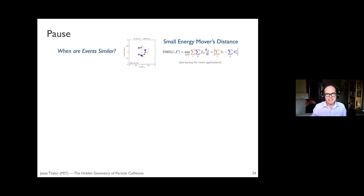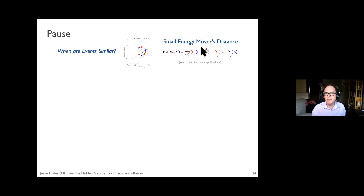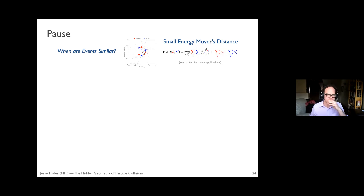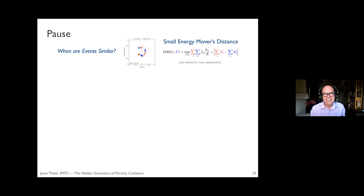To answer the question of when are events similar: they are similar when they have small Energy Mover's Distance. This formula can be computed, and in the backup slides there are more applications and plots. What we want to do for the rest of the talk is talk about the geometry I get from this distance and how that geometry connects to other things already familiar in collider physics. One question you could ask is how unique is this form — there are many different notions of distance one could come up with, but we'll see that this particular notion is special from the collider physics perspective.